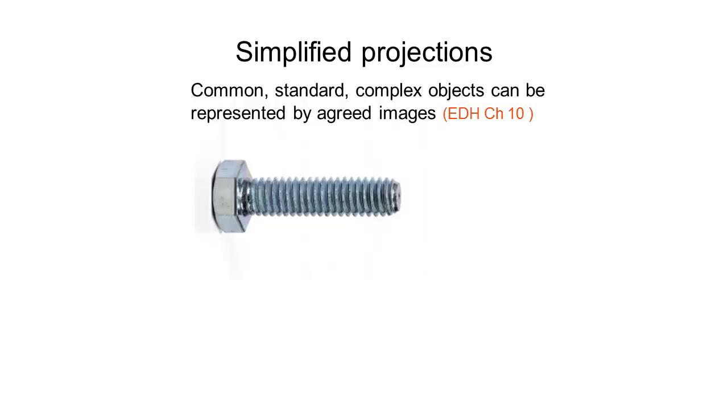So if we were to draw a standard projection of this it would be a lot of work because you've got effectively a spiral thread going around a circular shaft. As you can imagine producing a 2D drawing of that would take a lot of effort and we also have this hyperbola shape on the top of the bolt so constructing that would be a huge task.